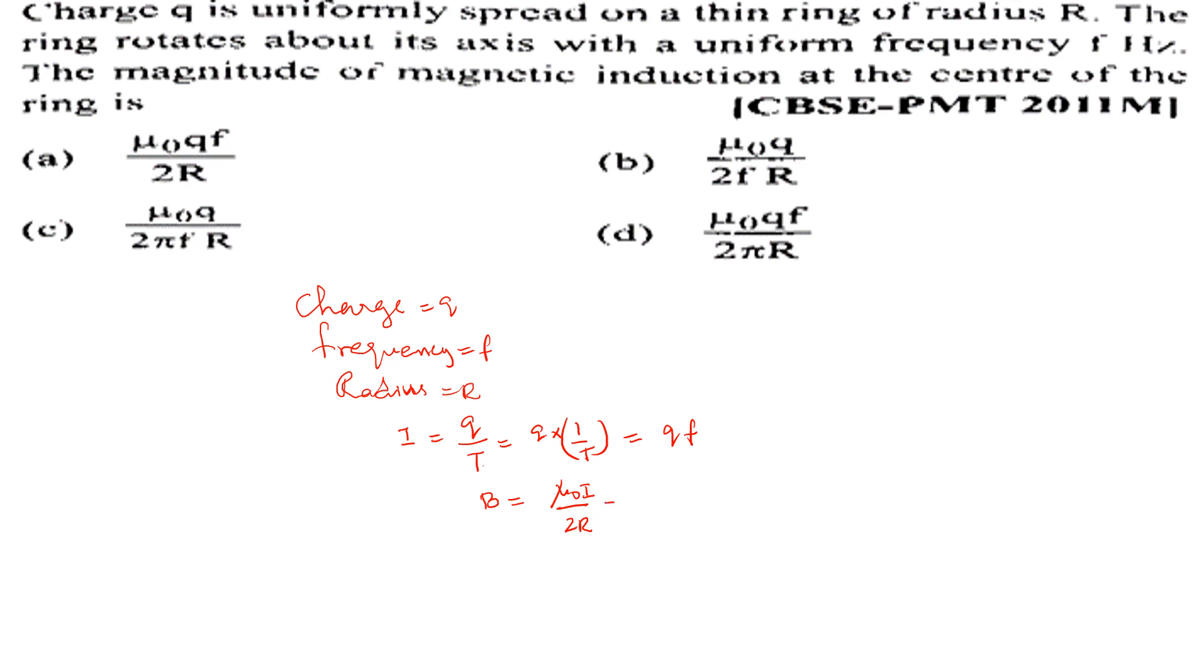Radius of ring is R. A is equal to 2R. So, here we go. Q is equal to 2R. So, option A is correct.